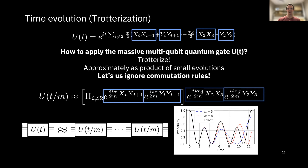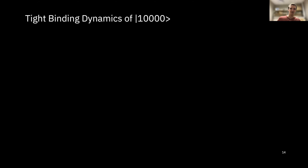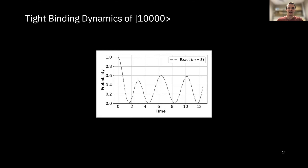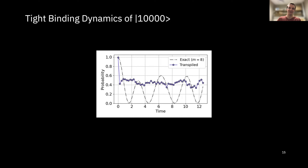When you plug this into a quantum computer, let's say you have an initial state of one-zero-zero-zero-zero, a single particle starting at the far left site, and you watch it traverse the lattice. You'd expect the classical exact values, but when you run it on a quantum computer you get something quite different, because there's noise on these devices. However, if you apply physically motivated error mitigation strategies, you can get dynamics that much more closely match the real dynamics — and that's what I'll show at the end.